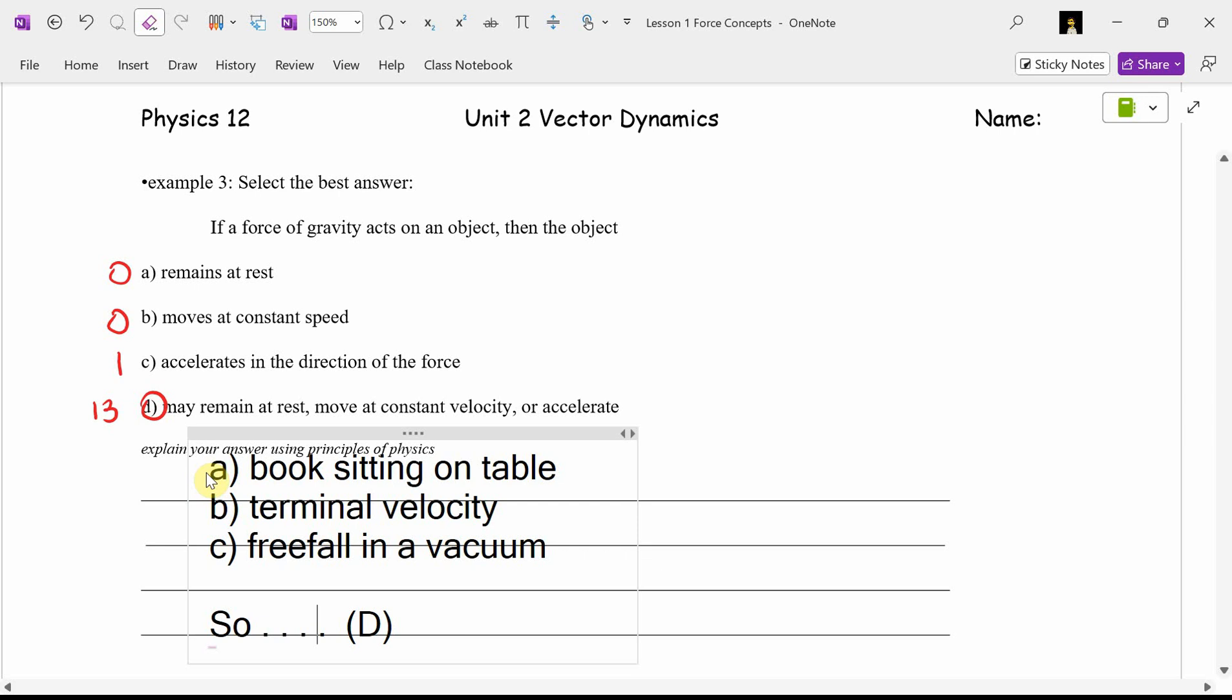When air resistance and gravity equal each other, the forces are balanced. If the forces are balanced, what's my acceleration exactly as a number? Zero. C would be free fall in a vacuum. Or right at the beginning before air resistance kicks in. So D must be the correct answer.